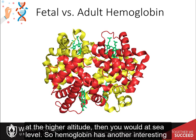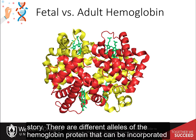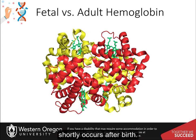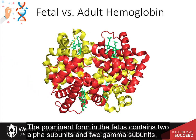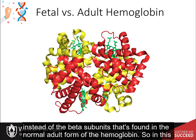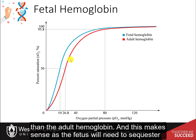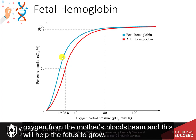Hemoglobin has another interesting story: there are different alleles that can be incorporated into the tetramer. In the human fetus, hemoglobin composition differs from the adult form. The prominent fetal form contains two alpha subunits and two gamma subunits instead of the adult beta subunits. Fetal hemoglobin shows higher binding affinity for oxygen than adult hemoglobin, which makes sense — the fetus needs to sequester oxygen from the mother's bloodstream to grow.